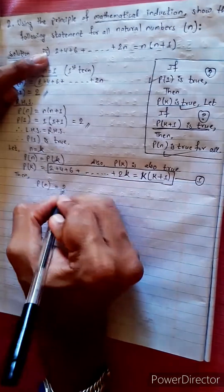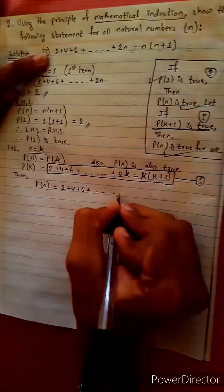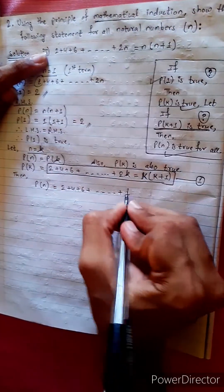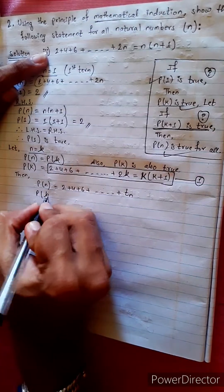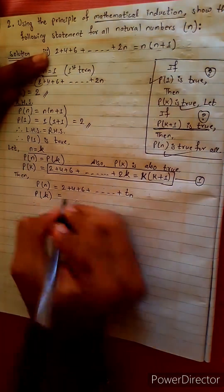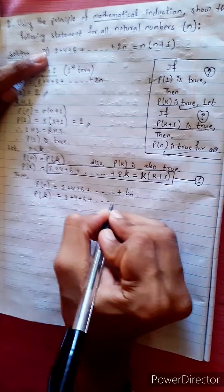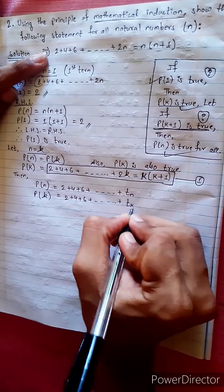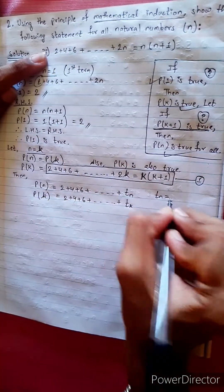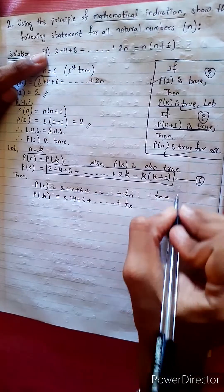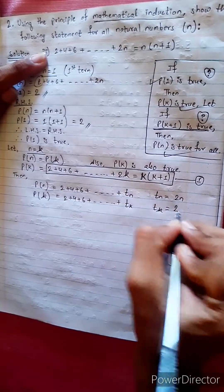Pn equals 2 plus 4 plus 6 plus ... plus 2n as the last term. Now Pk: 2 plus 4 plus 6 plus ... plus tk. The value tn equals 2n, so tk equals 2k.